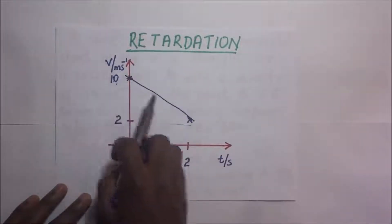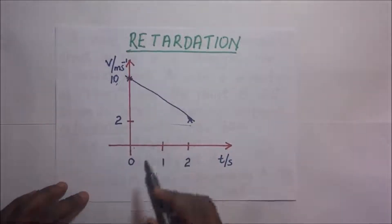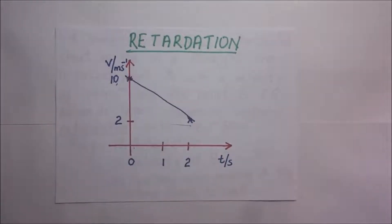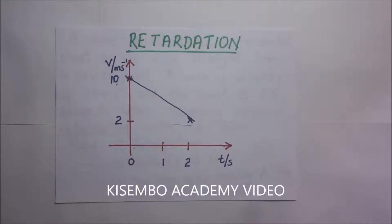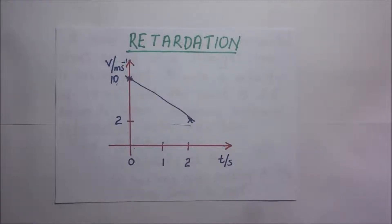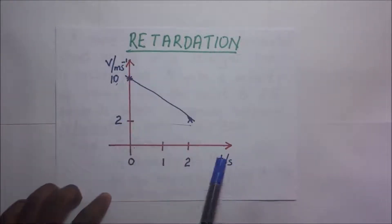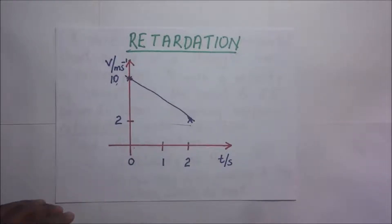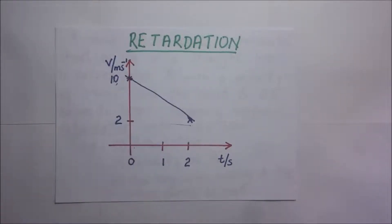It moved from 10 to 2. If you look at that graph, this graph will give us a negative slope. By definition, we know that acceleration is the rate of change of velocity. When the rate of change of velocity is increasing, the velocity-time graph gives you a positive gradient. But if the rate of change of velocity is reducing, it means that you're going to have retardation.